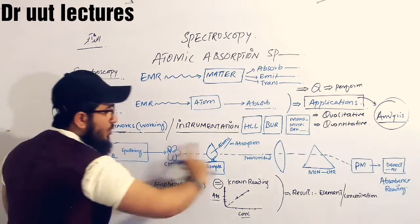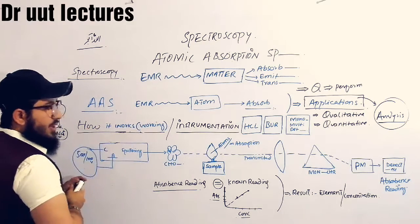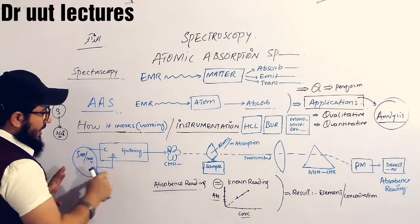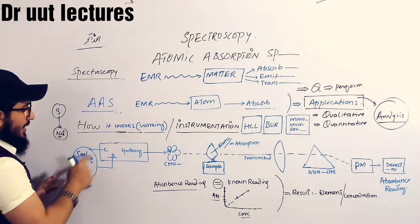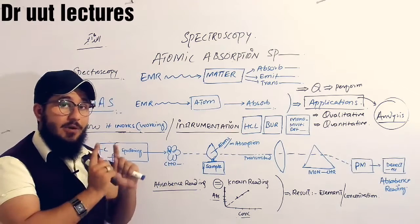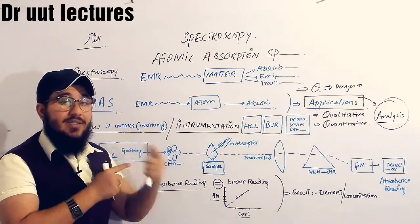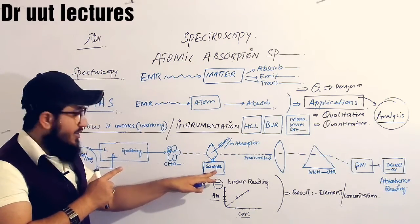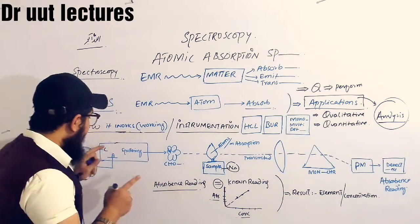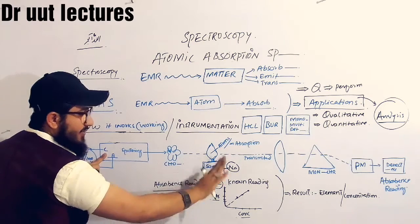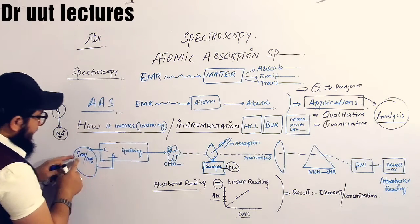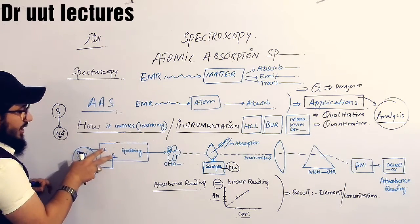Now we will cover working and analysis together. In the hollow cathode lamp, there is a cathode and an anode. The very important point is that the cathode must be made up of the element you are going to analyze. Suppose we want to analyze whether the sample contains sodium — our cathode must be made up of sodium. The sample is available here and we supply a voltage of 500 to 1000 volts through the cathode and anode.